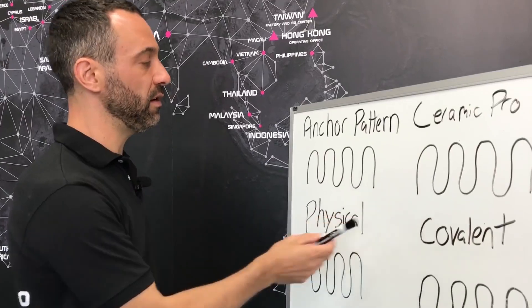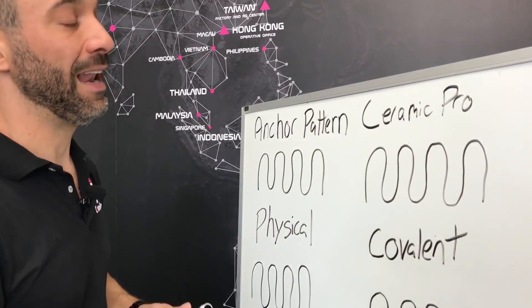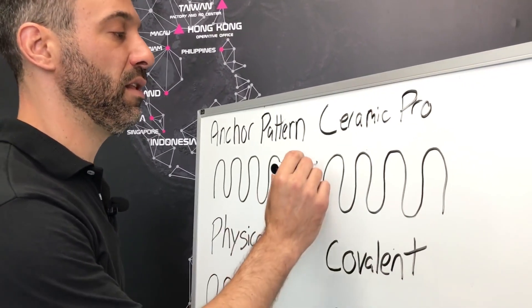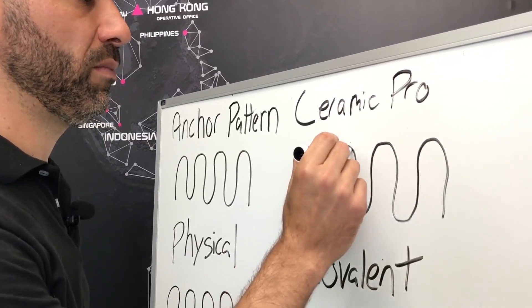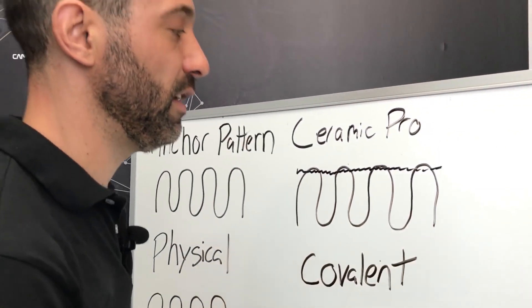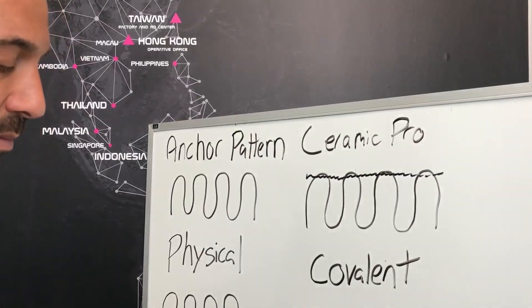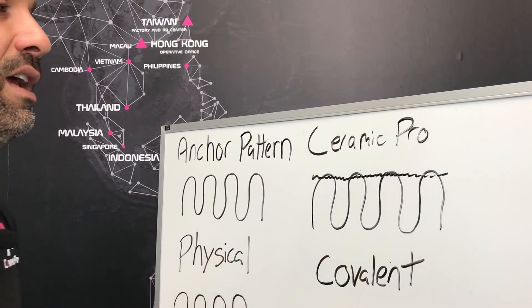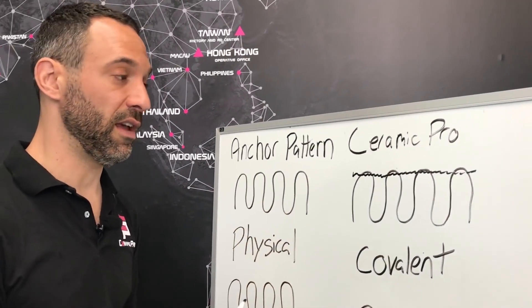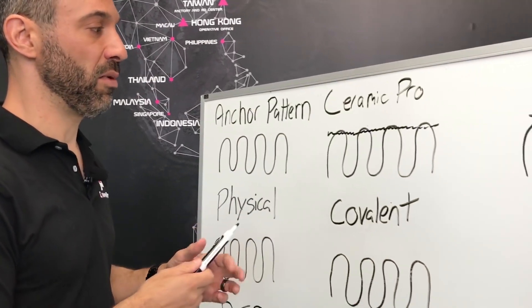What Ceramic Pro does is it takes your anchor pattern and it basically permanently fills the pores with silica dioxide and titanium dioxide, permanently increasing the hardness and UV protection. All of the great characteristics that Ceramic Pro offers.